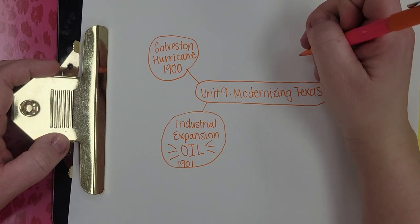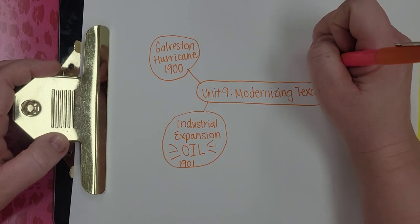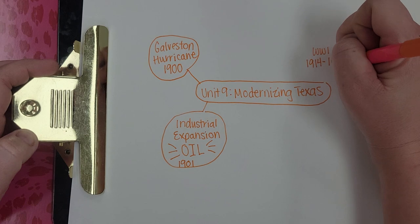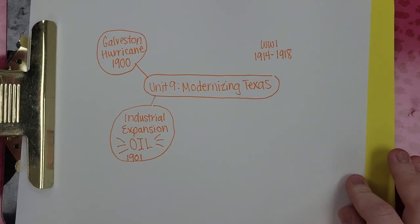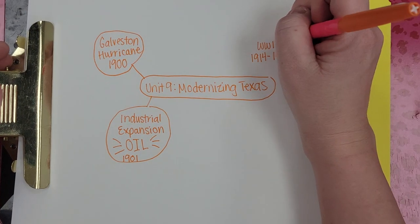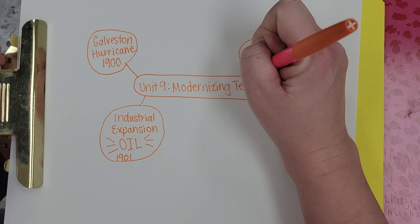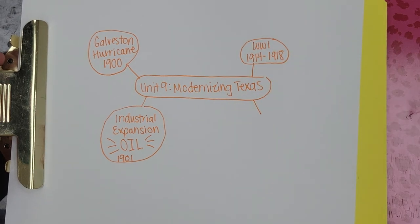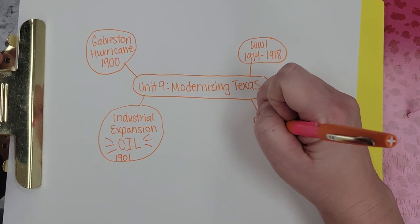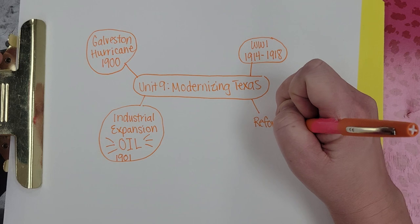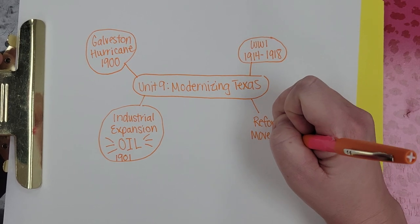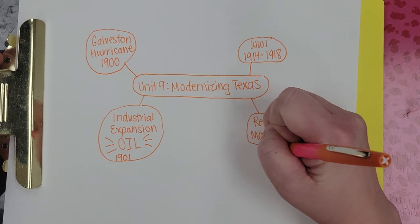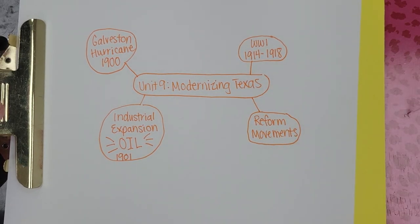The next thing that happens is World War I, which started in 1914 and goes until 1918. After that, there is a series of reform movements that bring a lot of change to Texas.